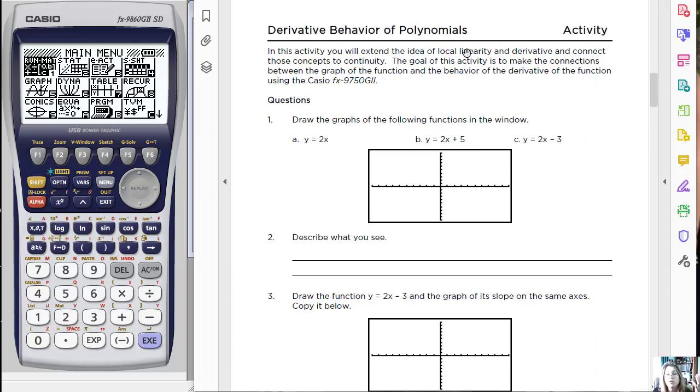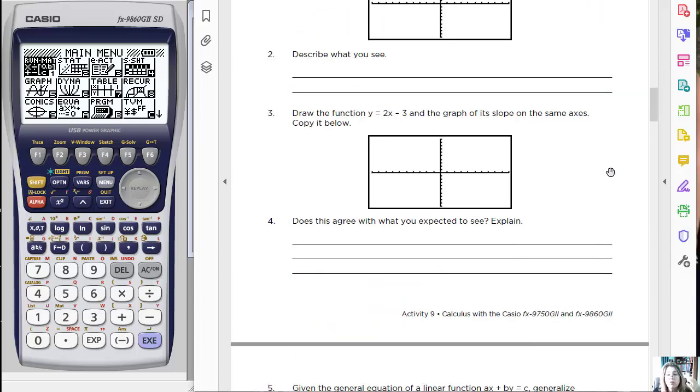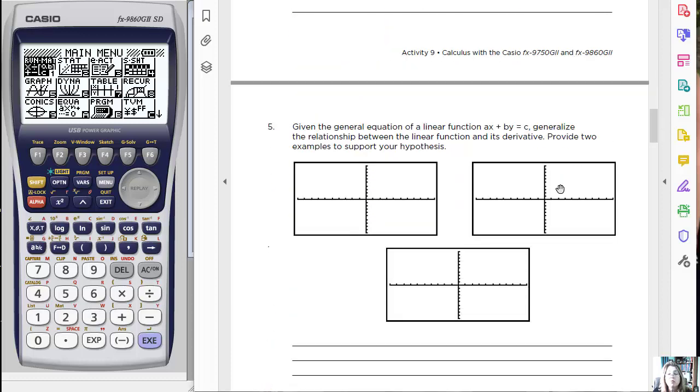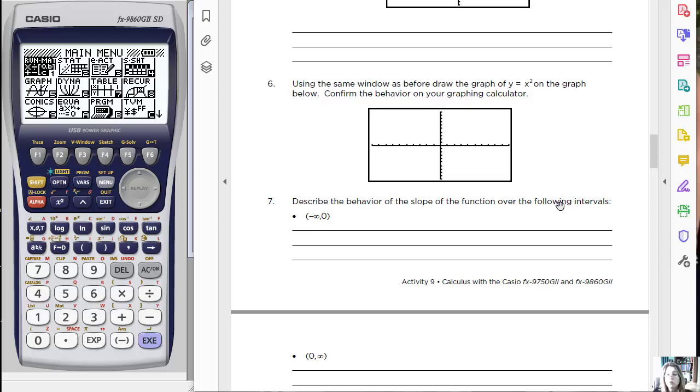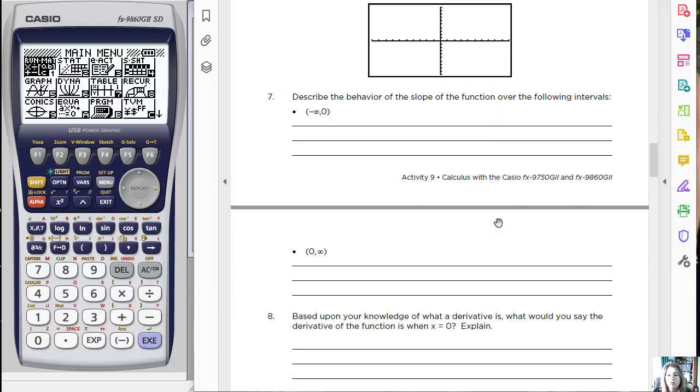Here's the first activity. This is just polynomials in general. Basically they're going to draw the graphs of the function hopefully without a calculator, then describe what they see. Then they're going to draw the graph and its slope. They're able to look at the derivative with the calculator at this section and compare them. What are they noticing? Let's look at a window. What's the slope's behavior in this window? They're trying to get an understanding of what that derivative actually is compared to the function that it's from.